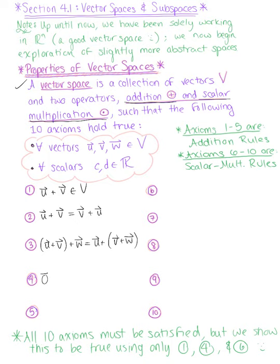Number four, for the zero vector in our vector space, the zero vector plus vector u must be equal to vector u. Number five, for all vector u in the vector space V, vector u plus negative vector u is equal to the zero vector. And these first five are the addition rules.